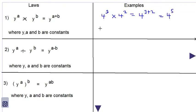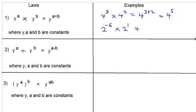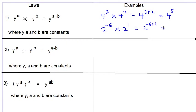Another example: 2 to the power minus 6 multiplied by 2 to the power 1 would be equal to 2 to the power minus 6 plus 1, which gives 2 to the power negative 5.